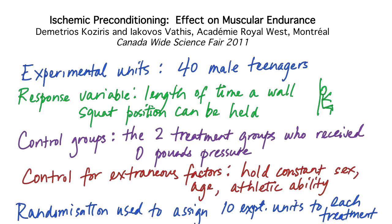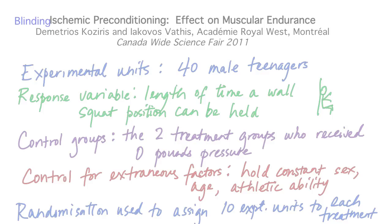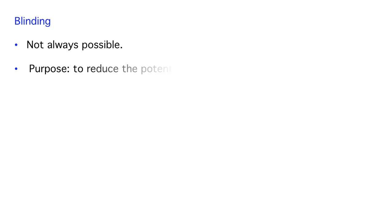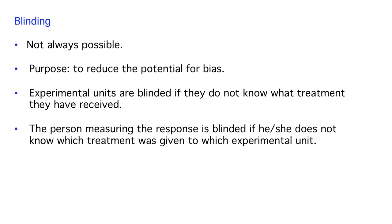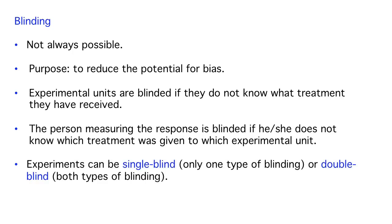This ischemic preconditioning experiment also illustrates some other characteristics of excellent design. The students used blinding. Blinding, if it can be used in an experiment, reduces the potential for bias since people don't know if a treatment is in place or not. Subjects can be blinded, meaning they don't know which treatment they received. The person measuring the response can also be blinded if he or she does not know which treatment was given to which participant. Experiments can be single-blind, meaning only one type of blinding was used, or double-blind if both types were used.